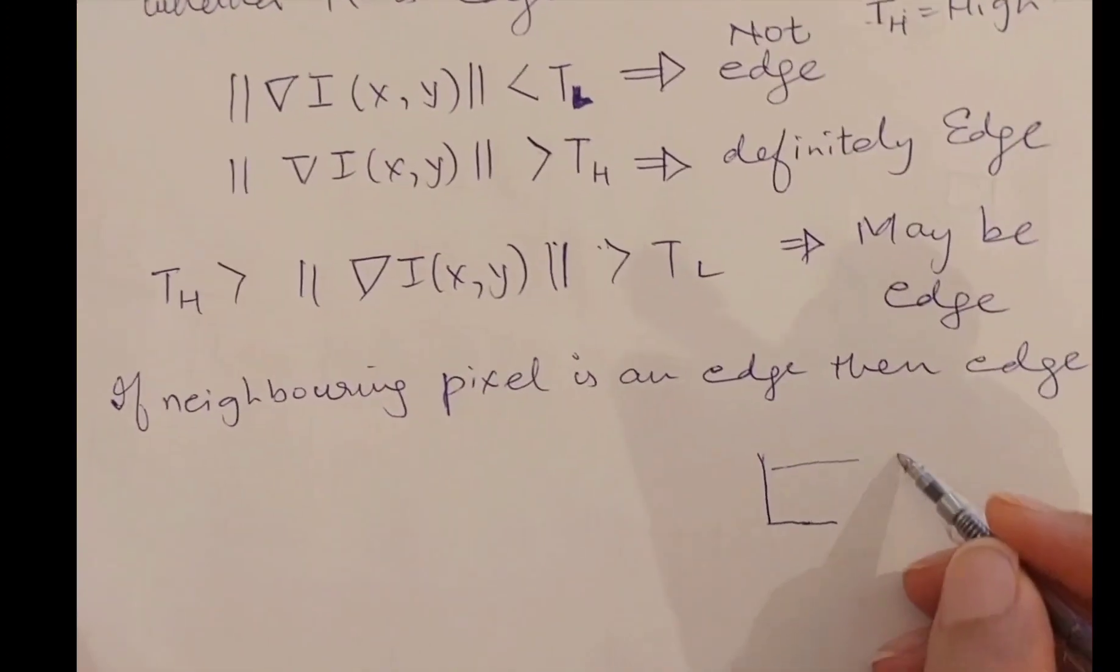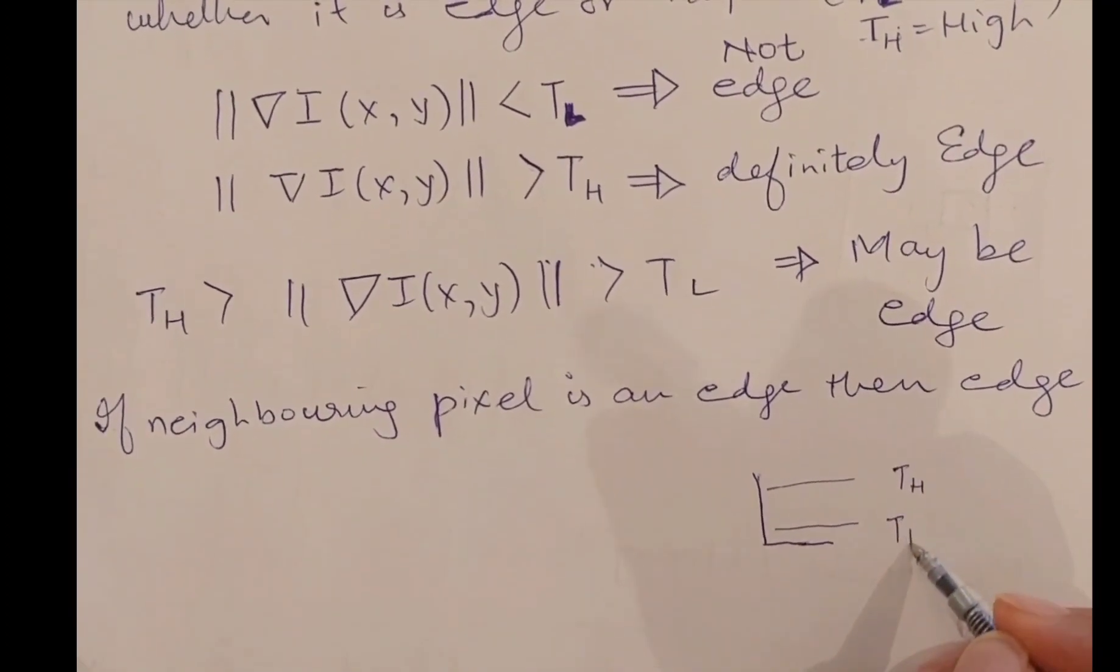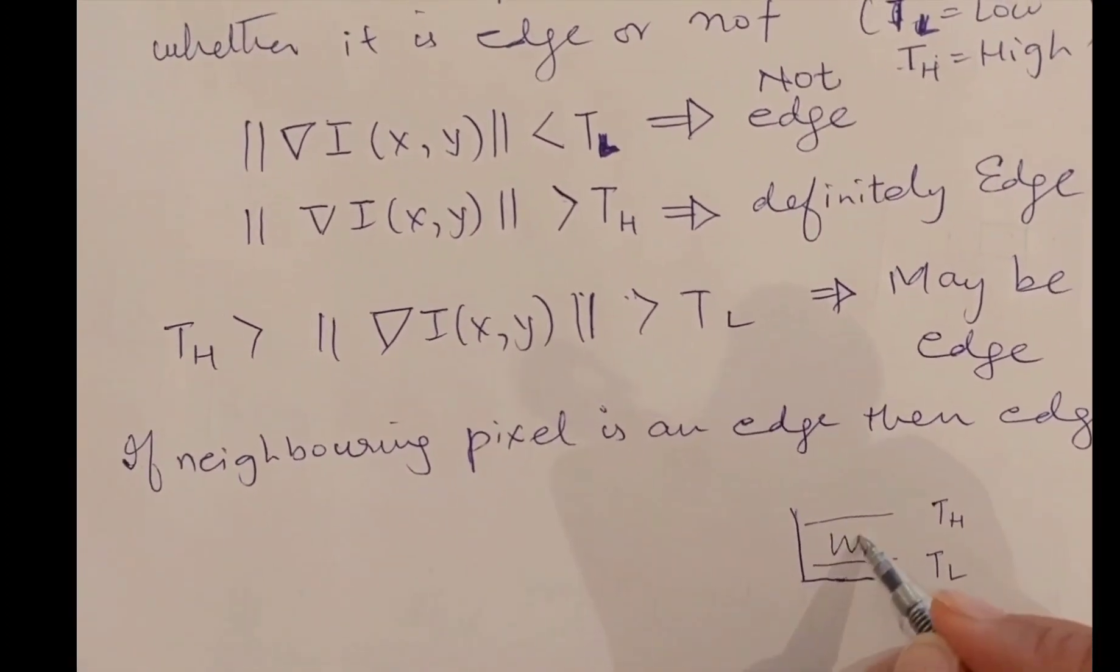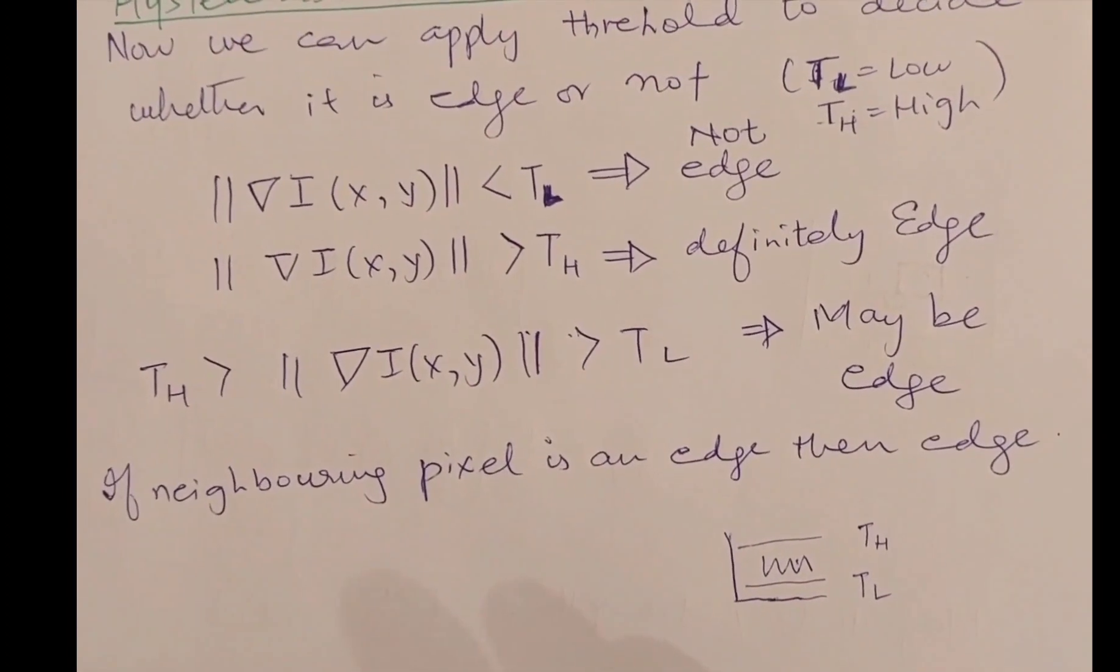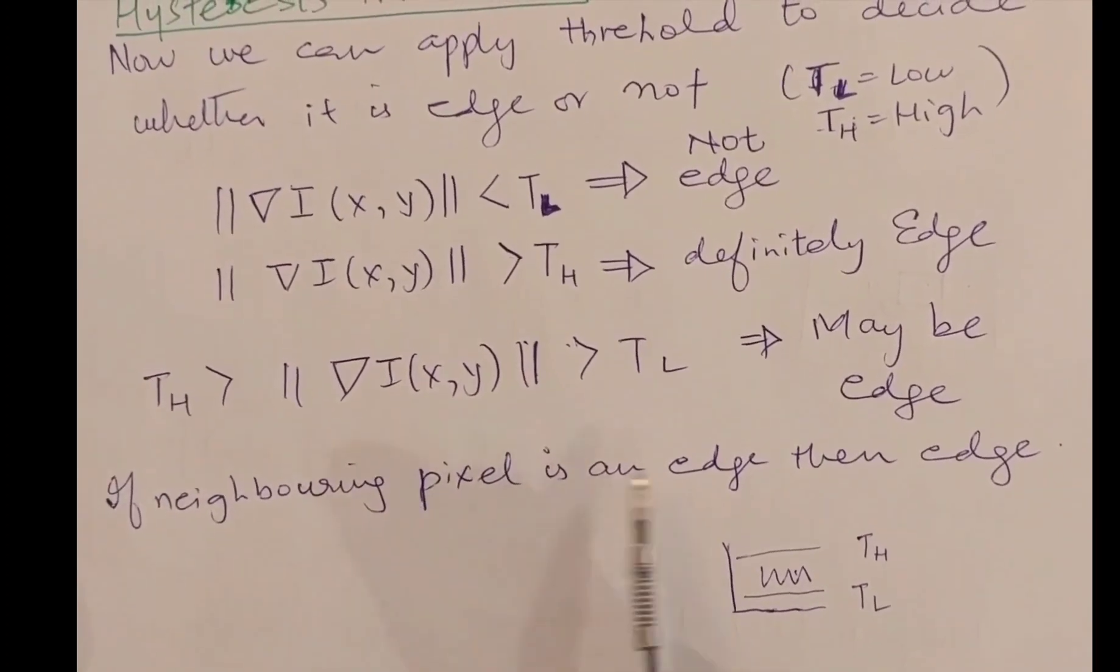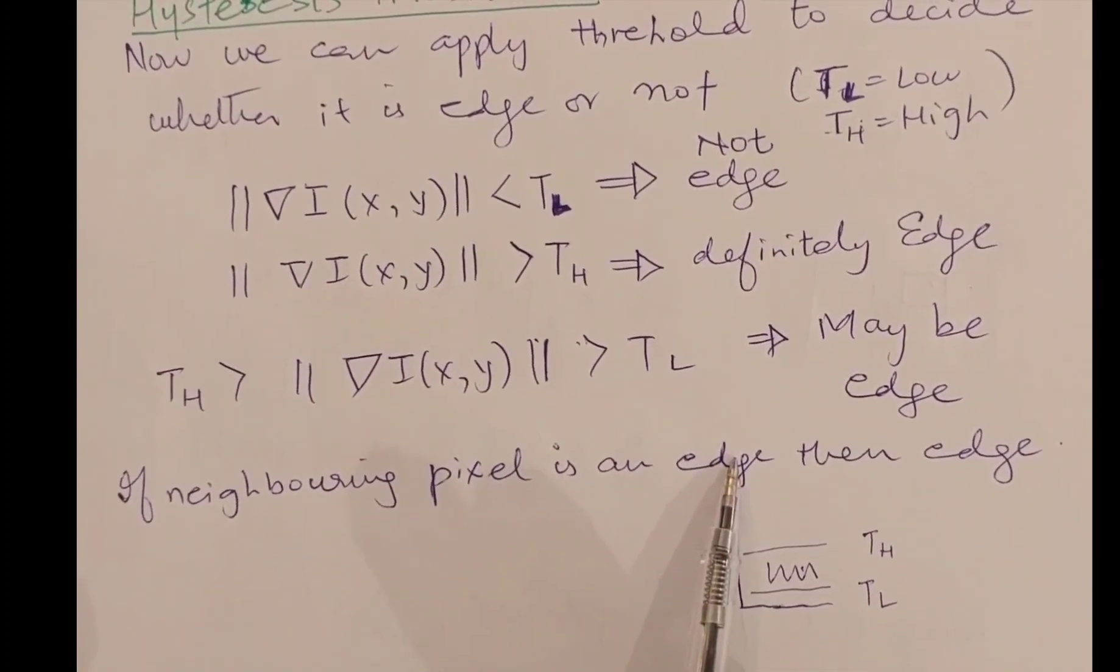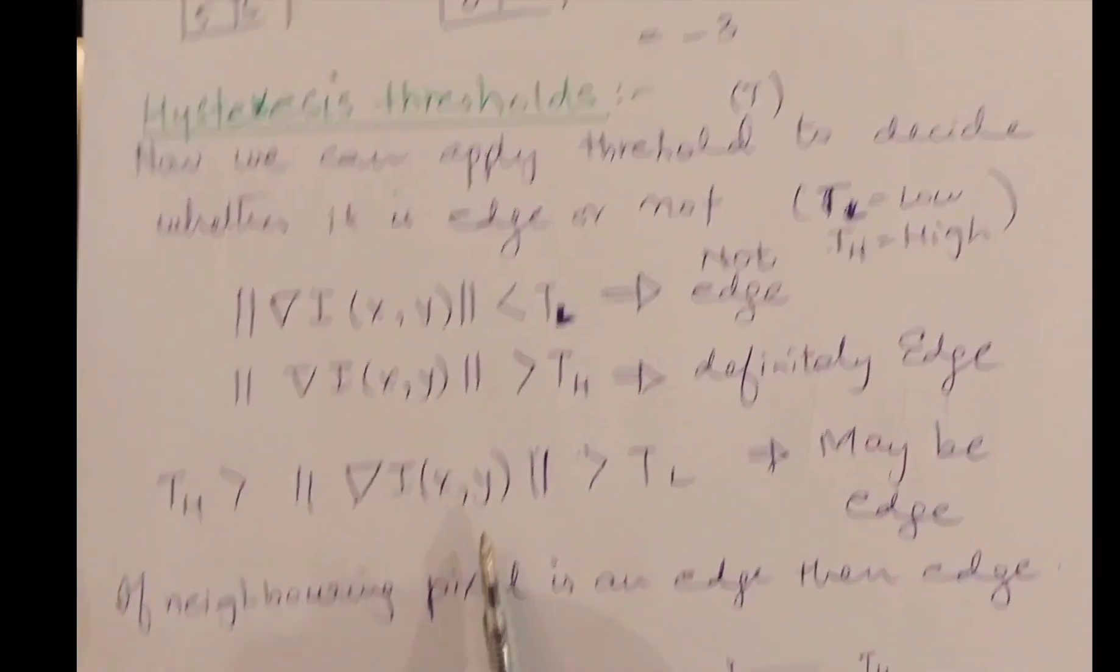See, if there is a higher threshold—this is T high—and if there is a lower threshold—this is T low—and something is lying here, so we will say that it might be an edge and it might not be an edge. And that depends on the neighboring pixel. If the neighboring pixel is an edge, then that pixel for which you are doing the calculations will also be an edge.